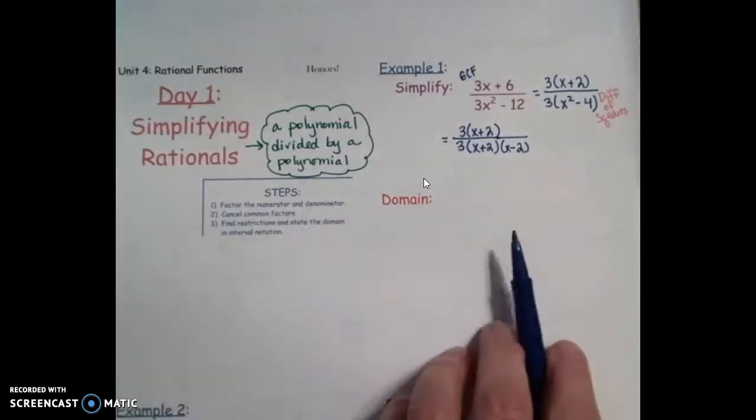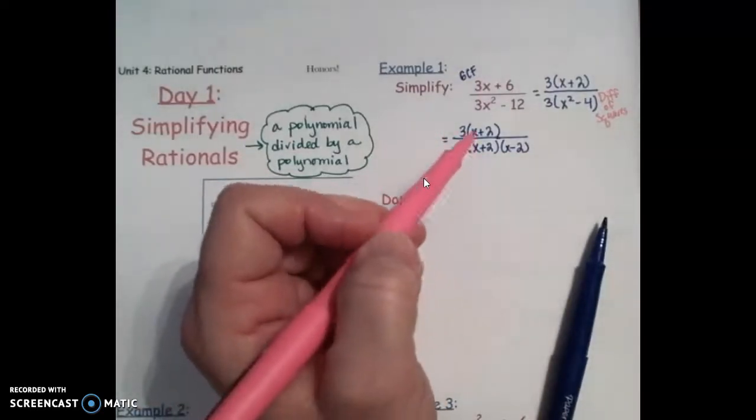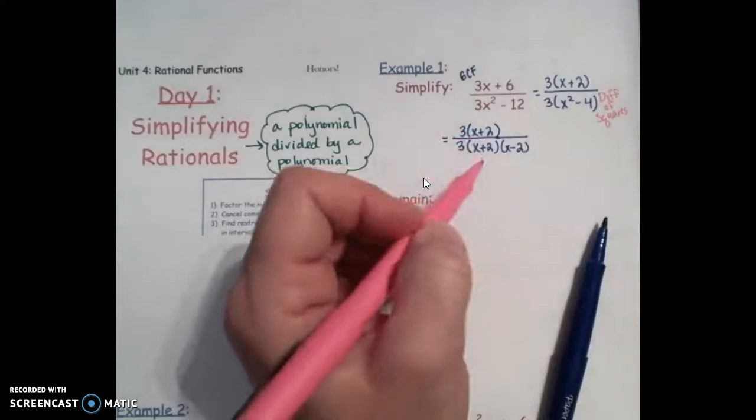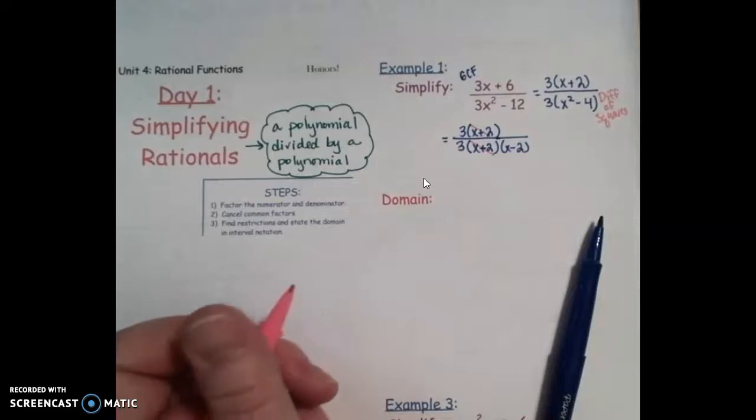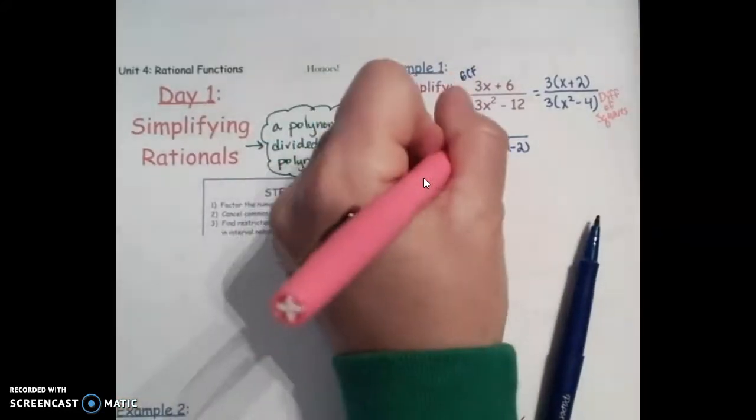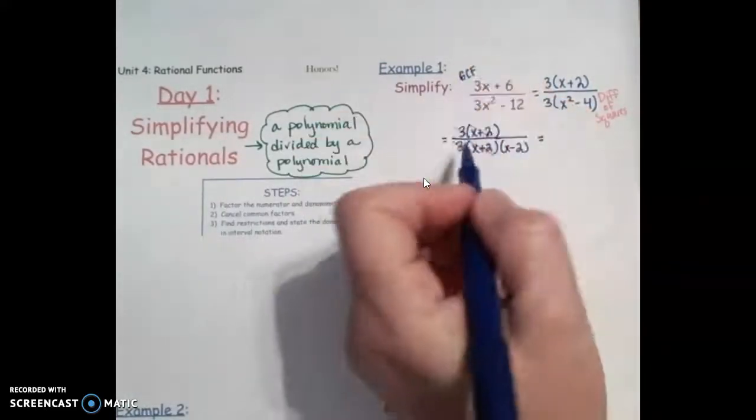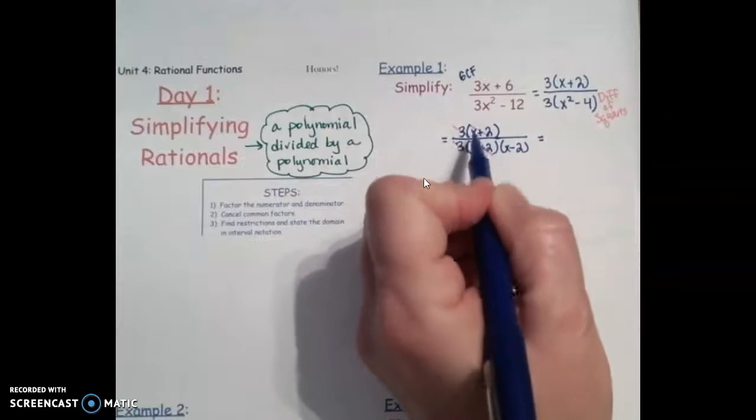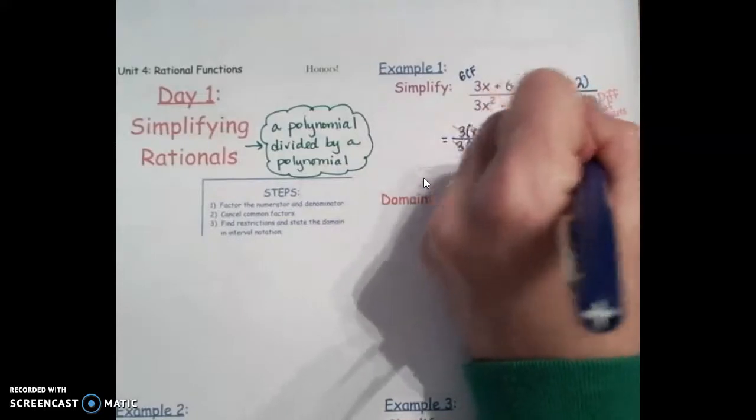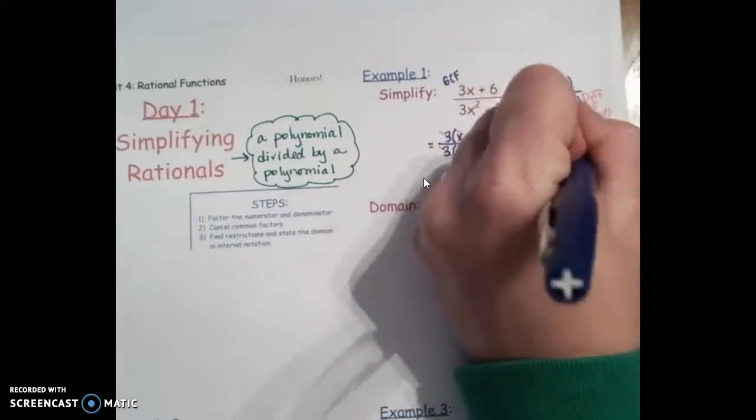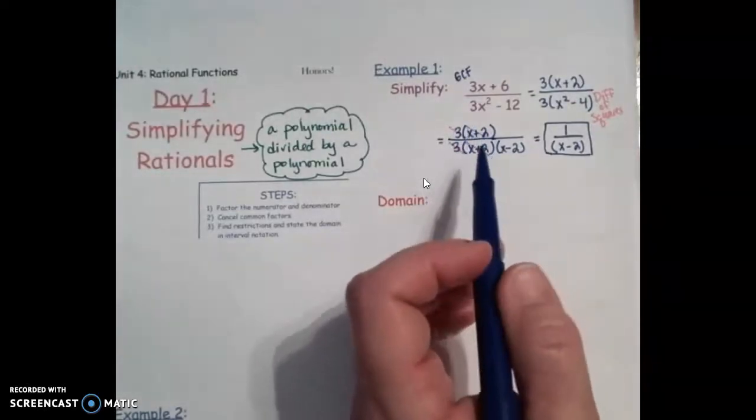Step 2 says cancel out common factors. A common factor is something that you can divide and get 1. They come in pairs. So x plus 2 divided by x plus 2 would give us 1. 3 divided by 3 would give us 1. When I simplify this, remember that was 1's on top, and then on the bottom we have x minus 2. So that's the simplified version of that rational.